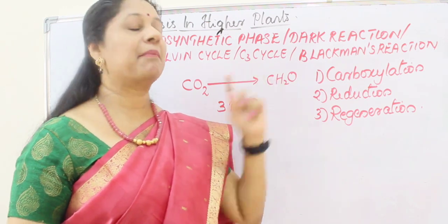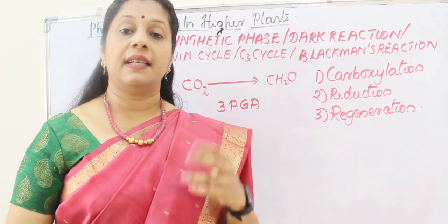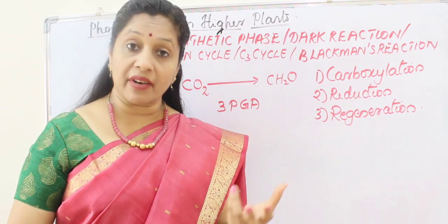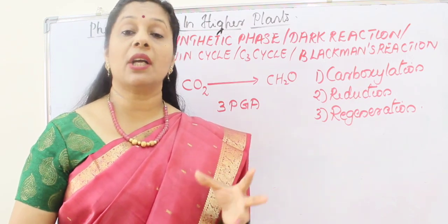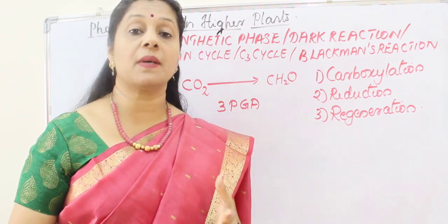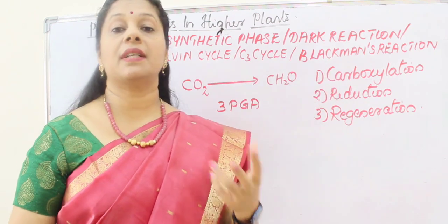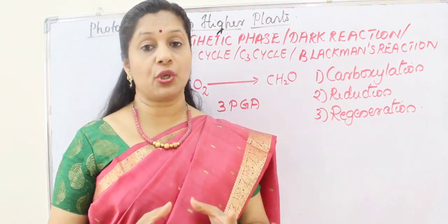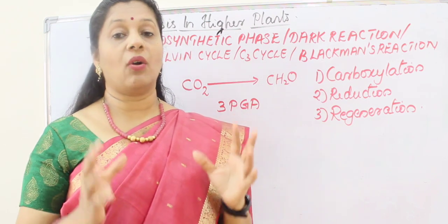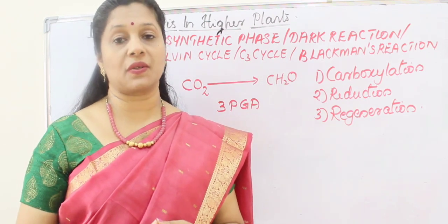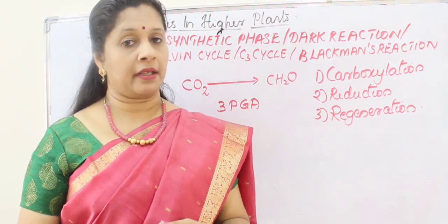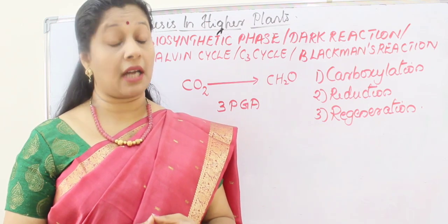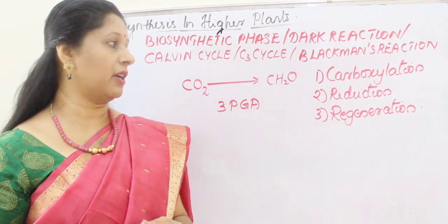One more name is Blackman's reaction, because it is a biochemical phase in which biochemical reactions are happening, and those reactions were explained by Blackman, so it is named after him. All these names indicate the second phase of photosynthesis — the dark reaction — in which carbohydrate is produced from carbon dioxide.